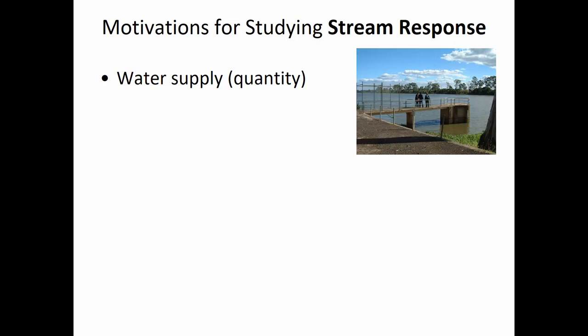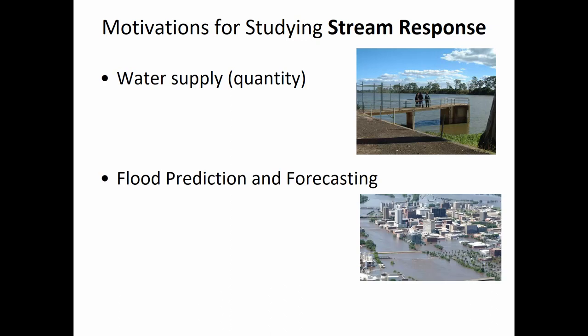These factors all play into the stream response — the hydrograph as a function of time — which is what we'll predict with watershed modeling software. We care about it because it tells us how much water is available to consume, or when floods are going to occur. It allows us to plan for floods — here in Huntington we have flood walls, and operators need advance notice to put those gates on before the river rises.